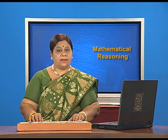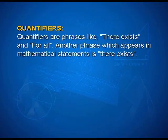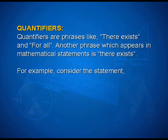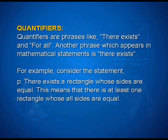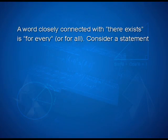Now students, let us study about what quantifiers are. Quantifiers are phrases like 'there exists' and 'for all.' For example, consider the statement P: there exists a rectangle whose sides are equal. This means that there is at least one rectangle whose all sides are equal. A word closely connected with 'there exists' is 'for every' or 'for all.'